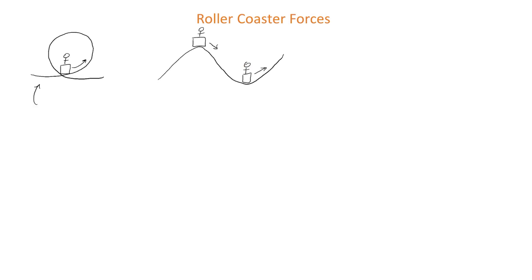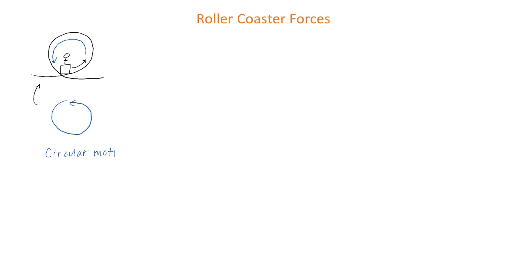Let's start by looking at the loop-de-loop, also called a vertical loop. When the rider goes around the loop they are moving with circular motion, and we learned that when an object is moving in a circle the net force acting on the object is the centripetal force. The equation for the centripetal force is F_net = mv²/r.